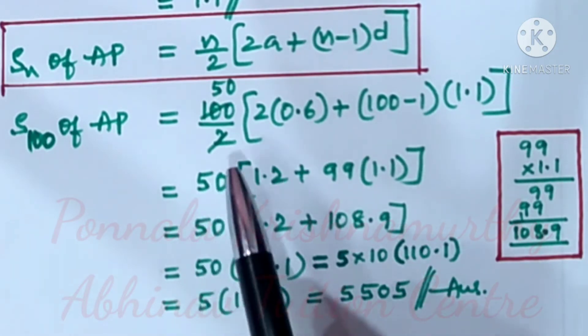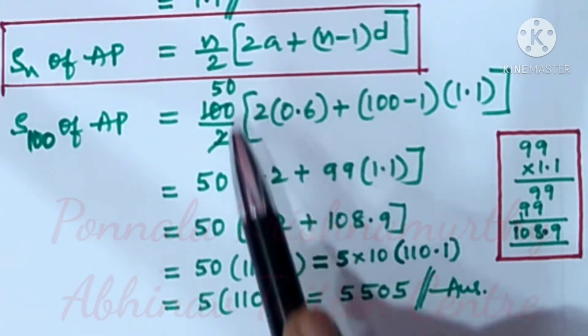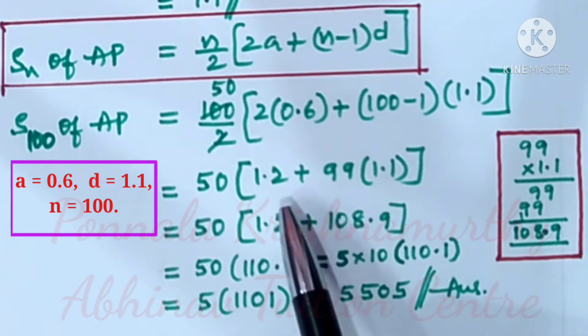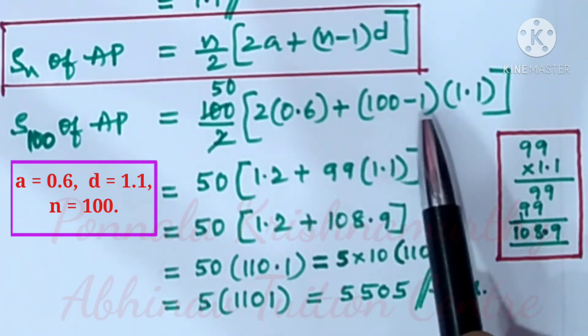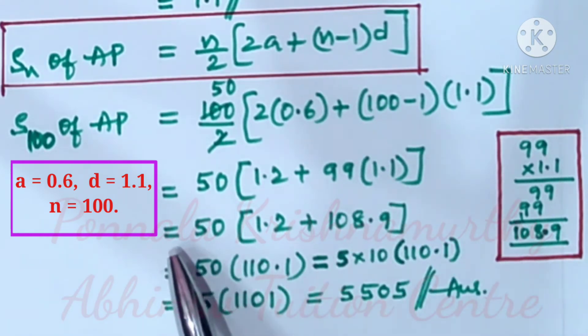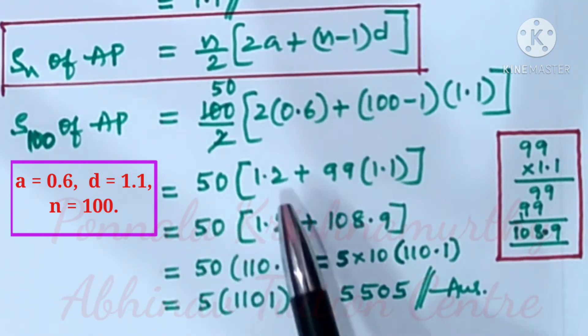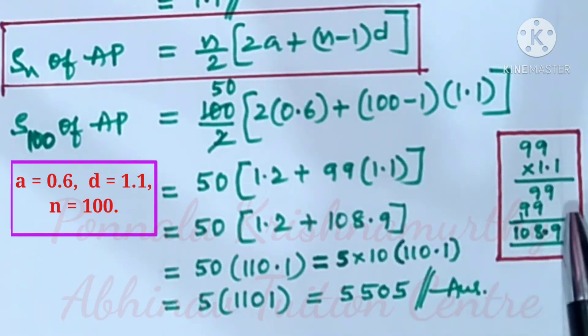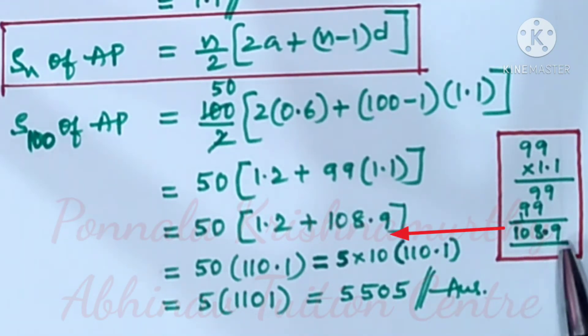That is equal to 50 into 2 into 0.6 is 1.2 plus 99 into 1.1. That is equal to 50 into 1.2 plus 99 into 1.1 is 108.9.